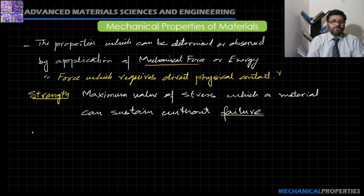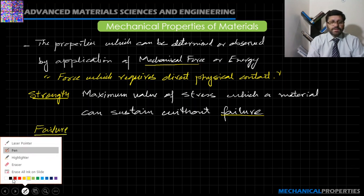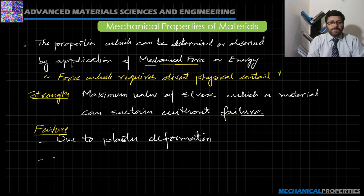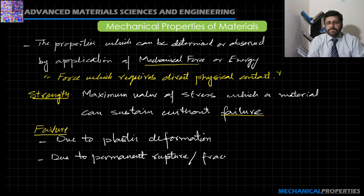Now how to express or define failure? We consider failure in two ways: failure due to plastic deformation in the material, and failure due to permanent rupture or fracture. These terms are associated with the type of material — ductile materials which undergo deformation prior to fracture, and brittle materials which straightway go for rupture or breaking of the material.